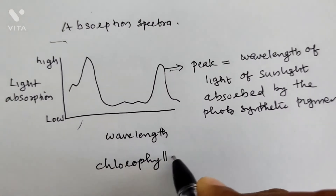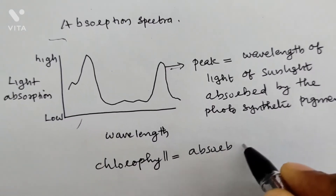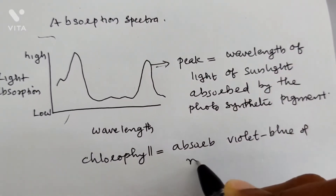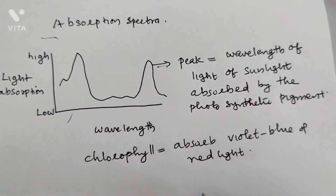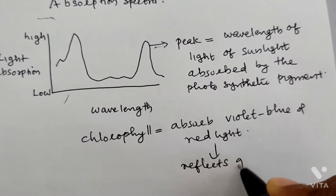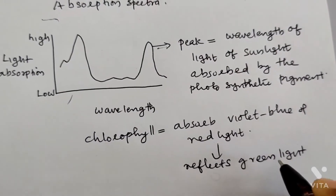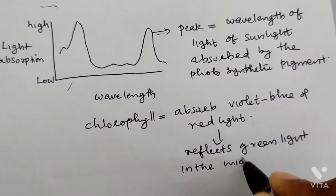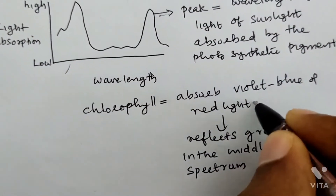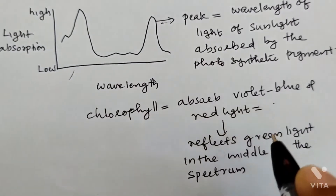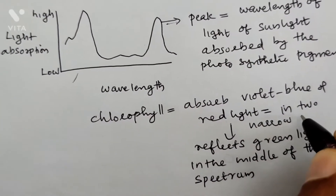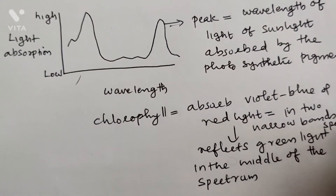An example of a pigment is chlorophyll. This chlorophyll pigment absorbs light, especially violet, blue, and red light, and it reflects green light in the middle of the spectrum. This absorption of violet, blue, and red light occurs in two narrow bands of the spectrum.